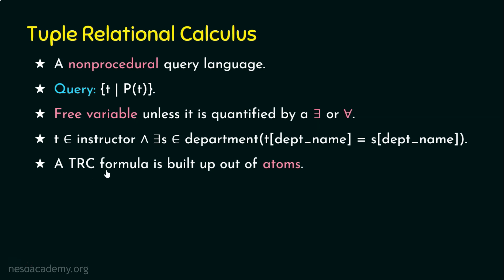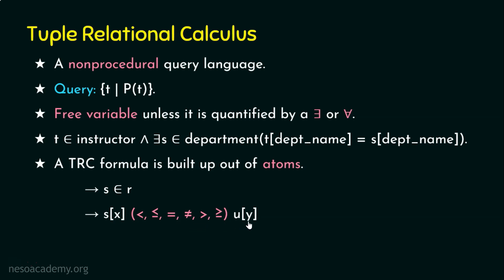A tuple relational calculus formula is built out of atoms. When we say s belongs to r, r is the relation and s is a tuple variable — that is one form of atom. We also have atoms like s[x] op u[y], where x is an attribute on which tuple variable s is defined, and y is an attribute on which tuple variable u is defined. In a relation r, tuples are rows and attributes are columns; x and y are attributes (columns), while s and u are tuple variables.